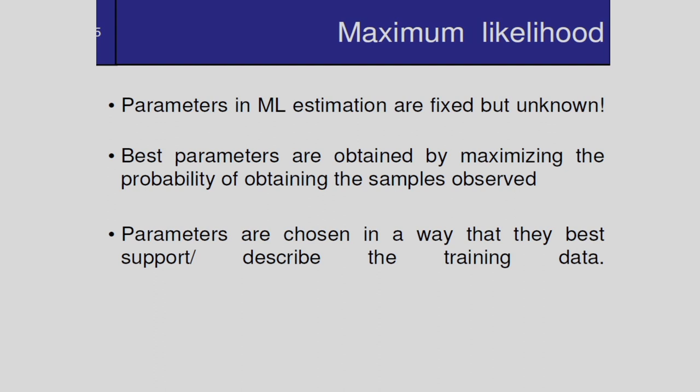In maximum likelihood estimation, the parameters are fixed but unknown. The best parameters are obtained by maximizing the probability of obtaining the observed samples. That means we maximize the probability of D given theta — this is the principle. Parameters are chosen in a way that they best describe the training data set. That is the concept of maximum likelihood estimation.